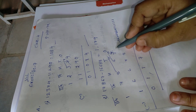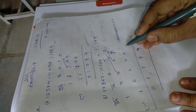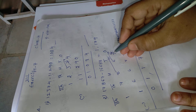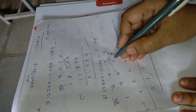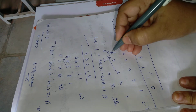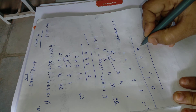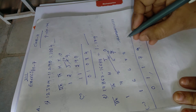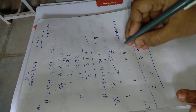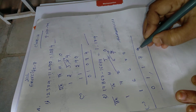17,867 minus 16,688. Is 7 minus 8 possible? No. So you will take one borrow. 10 plus 7 equals 17. So 17 minus 8 equals 9. Draw the line there. 17 minus 8 equals 9.